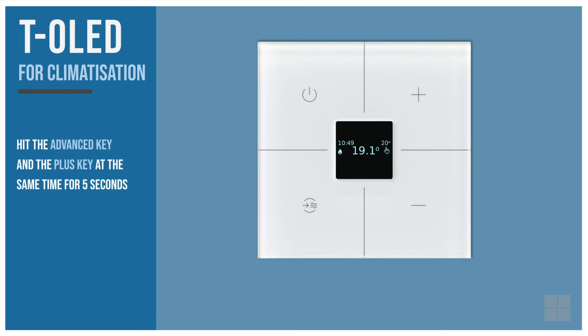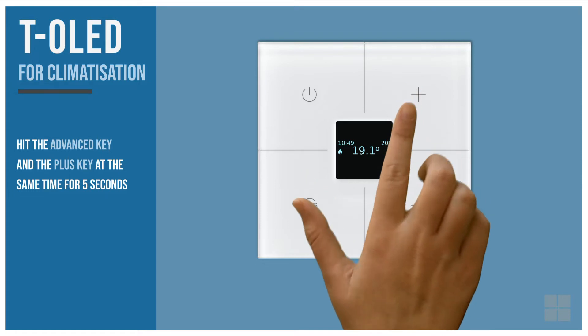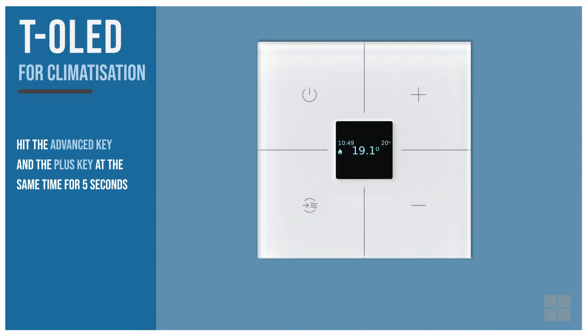To do it, hit the advanced key and the plus key at the same time for 5 seconds. If you touch both keys briefly, the touch panel moves to thermostat mode temporarily and comes back to automation mode after 10 seconds of inactivity.